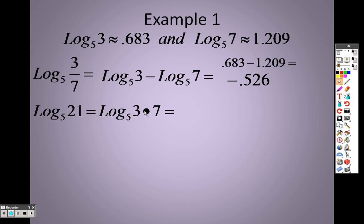And since it's multiplication, I could then pull these apart with addition. And since I know that log base 5 3 is .683 and log base 5 7 is 1.209, I can add those two items together to get 1.892.